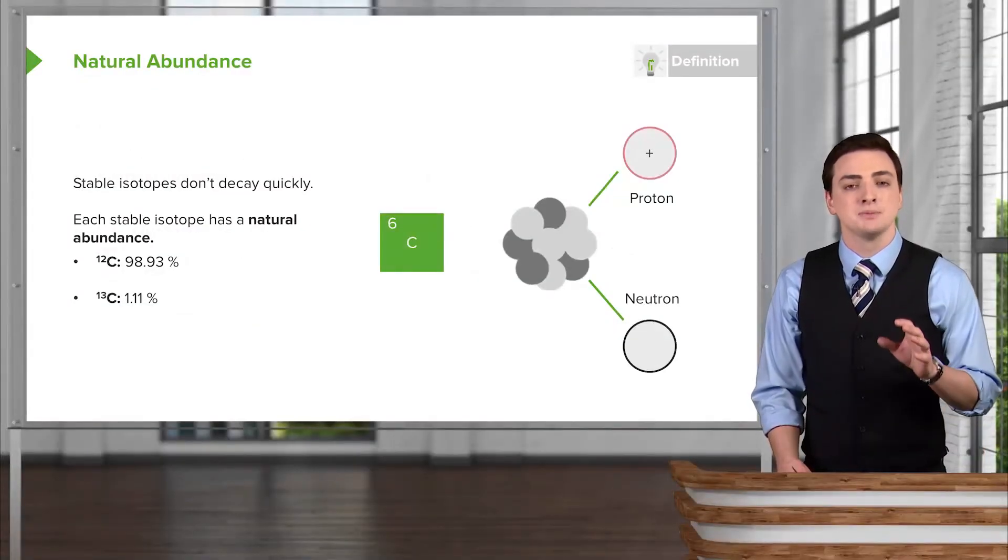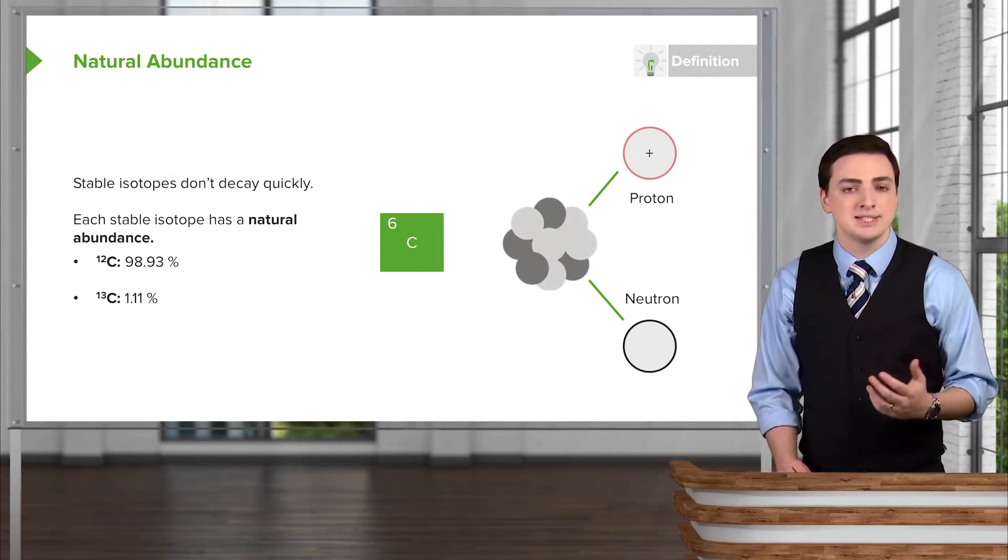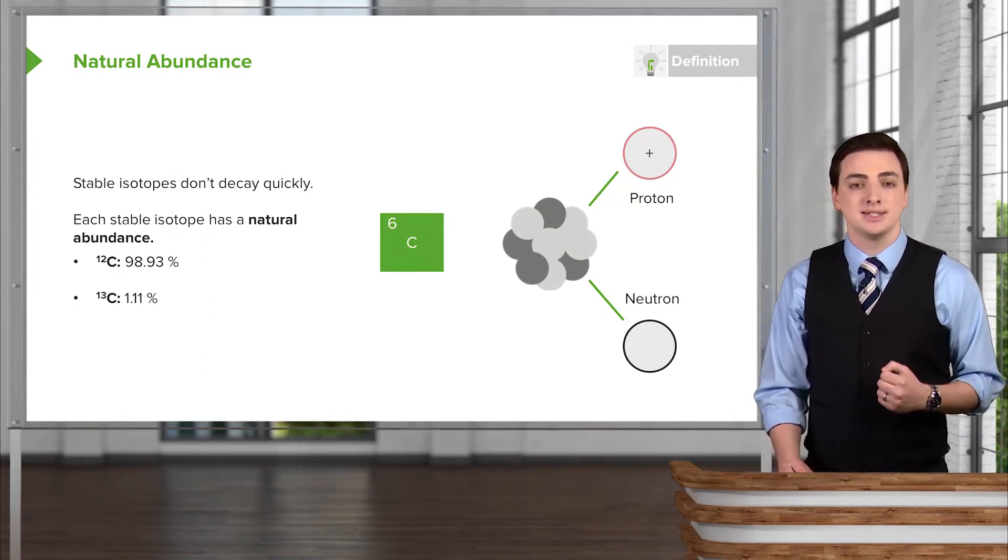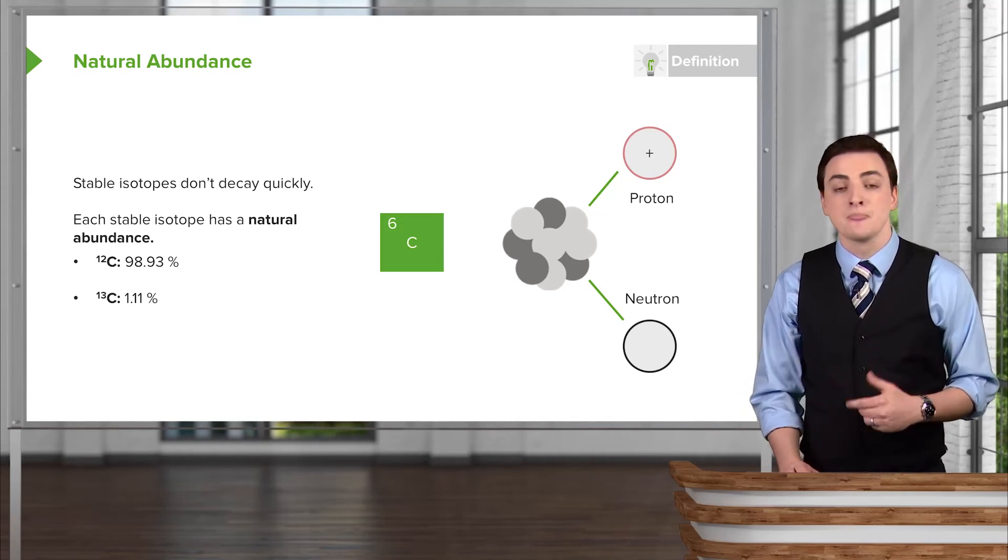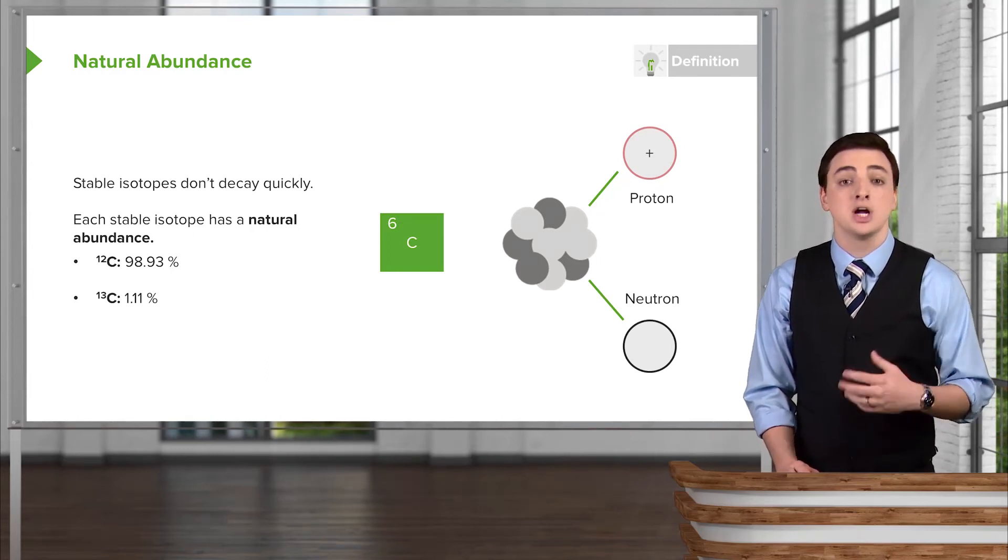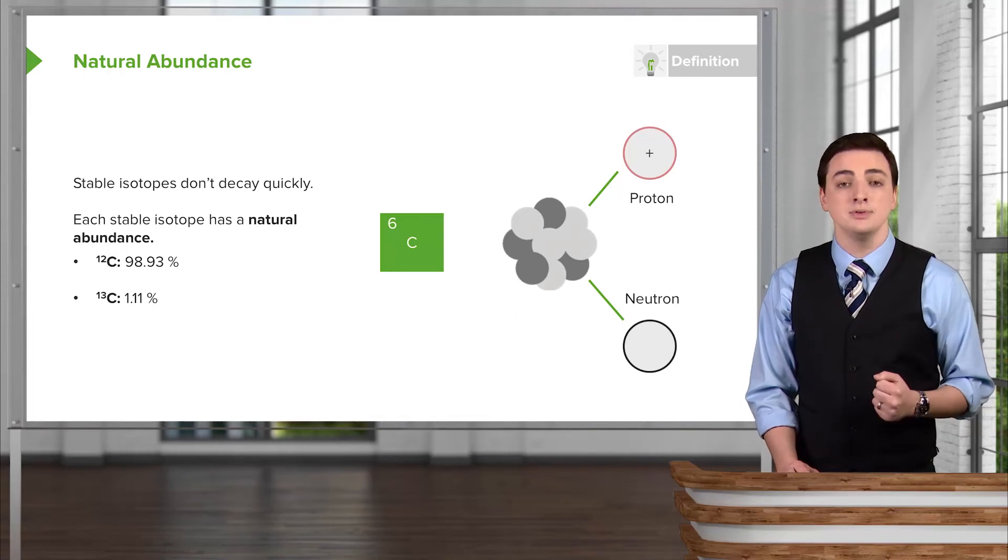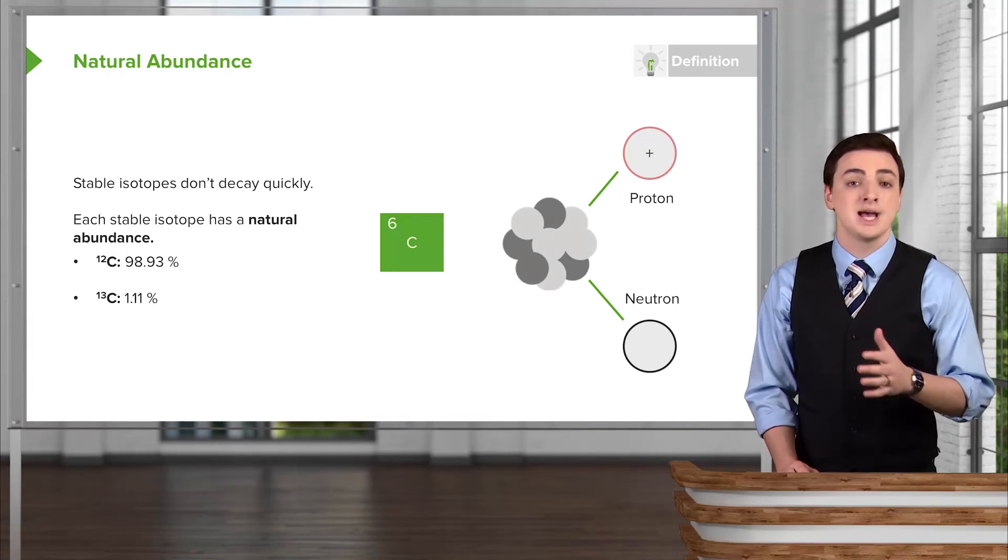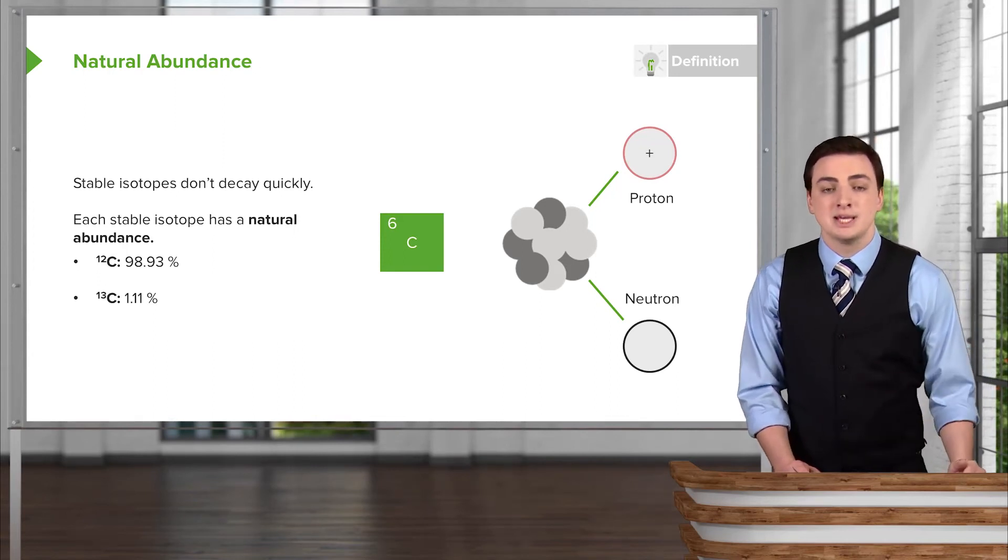Each stable isotope has a particular natural abundance, and it's important that we talk about stable isotopes because the unstable isotopes are the ones that we said break down and they don't stick around for very long. But some isotopes are stable, meaning that they do stick around long enough to be measured by us, so that if I scooped up maybe some carbon from the ground, I can measure how many different types of isotopes there are, and that would be referred to as their natural abundance.